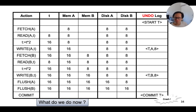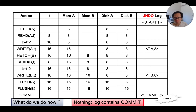What about the case where the system crashed after the entire log, including the commit record, has been flushed to the disk? In this case, we don't need to do anything because all the dirty data pages and the commit record have been written to the disk. Therefore, this transaction is considered as committed, and from the perspective of undo logging, we don't need to do anything during recovery.